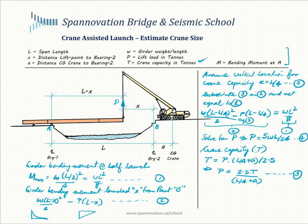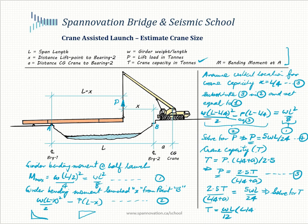Now what we do is set the two formulas for P from equations 4 and 5 equal to each other and solve for T. This means T is equal to wL/12 × (L/4 + a). This is the general rule of thumb formula we can use to determine the size of crane required, given the span length, the distance of the CG of the crane from the centerline of bearing, and the unit load of the girder system being launched.